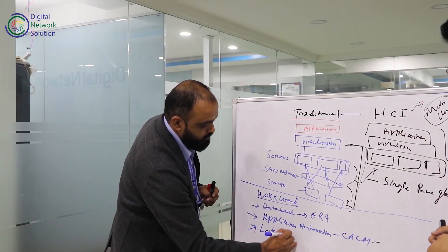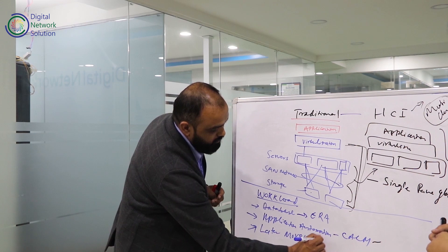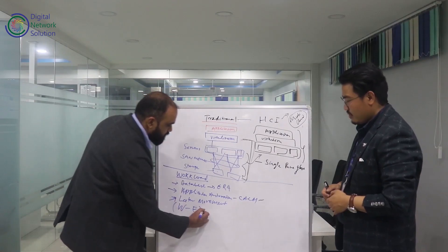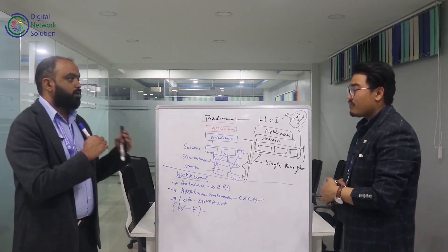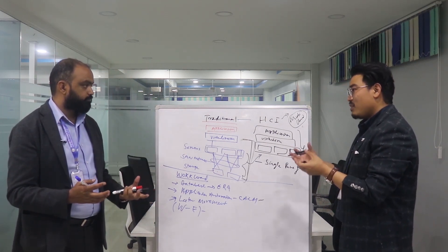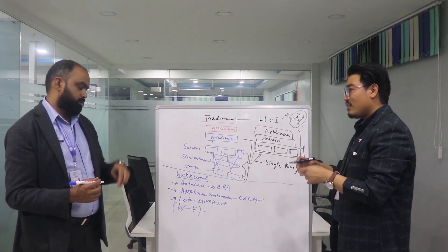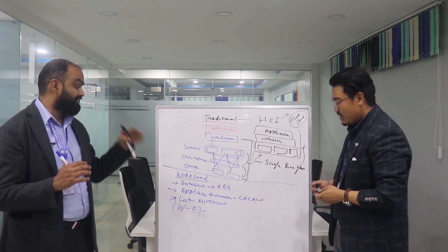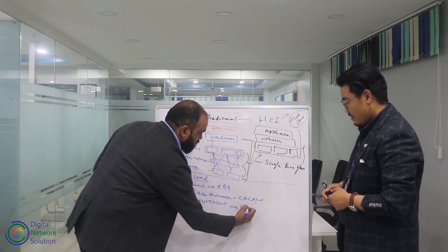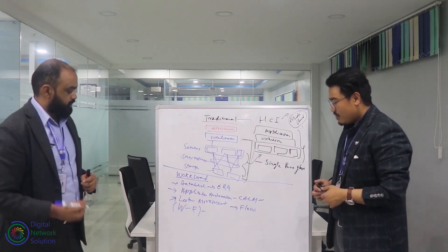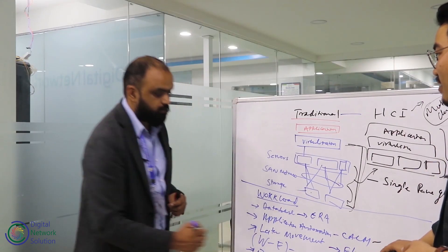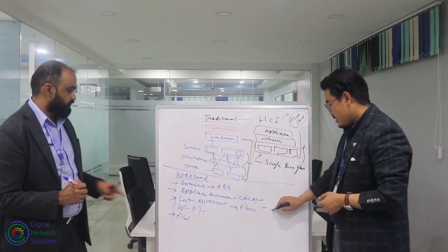For lateral movement — what we call east-west traffic — you have to protect from one VM to another VM, even when multiple VMs are on the same network. They need to be inspected and controlled. In order to do that, you use Nutanix Flow. This is also called micro-segmentation.